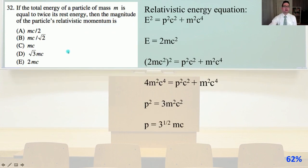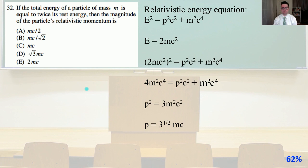Number 32. If the total energy of a particle of mass m is equal to twice its rest energy, then the magnitude of the particle's relativistic momentum is? Let's apply our relativistic energy equation where E squared equals p squared c squared plus m squared c to the fourth. So E equals 2mc squared, and 2mc squared quantity squared equals p squared c squared plus m squared c to the fourth. So 4m squared c to the fourth equals p squared c squared plus m squared c to the fourth, giving p squared equals 3m squared c squared, and p equals the square root of 3 times mc. That is answer D.